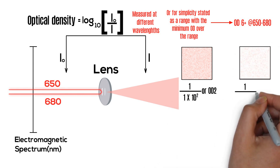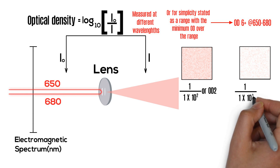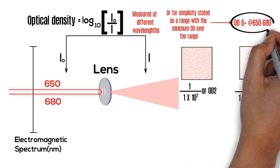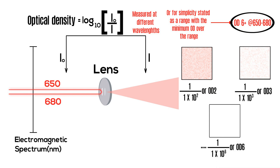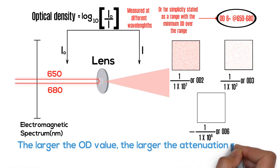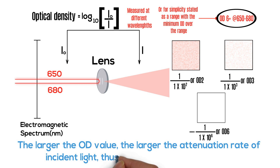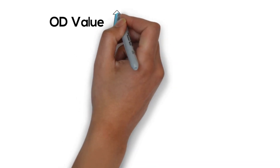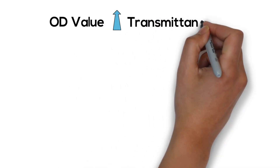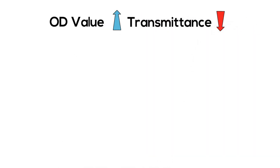For instance, in the image we're depicting, the lens has an OD of 6+ over the range of wavelengths from 650 to 680 nanometers. The larger the OD value, the larger the attenuation rate of incident light, thus providing higher protection. If the OD value increases, then the transmittance decreases at that particular wavelength.